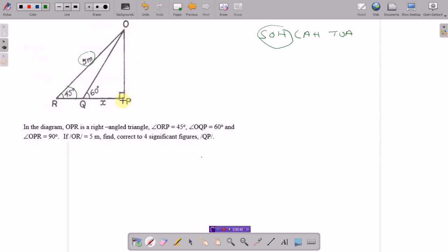And OPR is common to this triangle and the one that has got X. So sine is opposite over hypotenuse, so OP over 5 is sine 45 degrees. So OP is 5 sine 45 degrees.